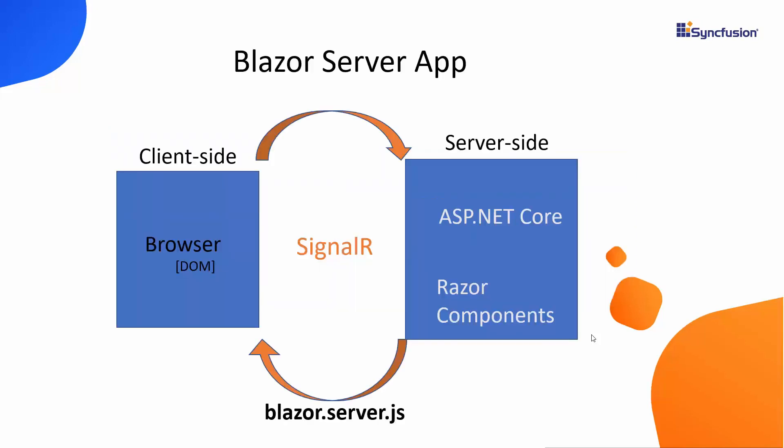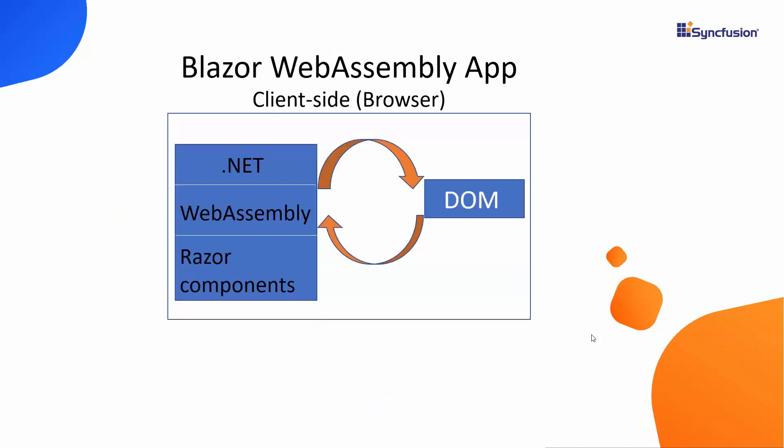The Blazor server app uses a SignalR connection to communicate and handle UI and event updates between the server and client. But in WebAssembly apps, the Blazor app dependencies and the .NET runtime are downloaded to the browser. The app runs directly on the browser UI, and any UI updates or event handling all occur at the client side. This means you can work offline with no need for a persistent connection between the server and client.